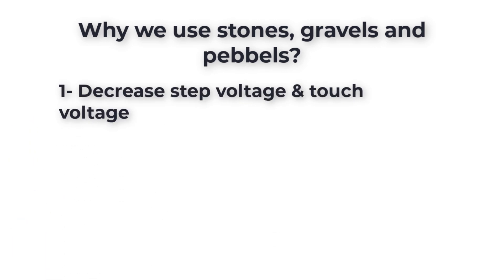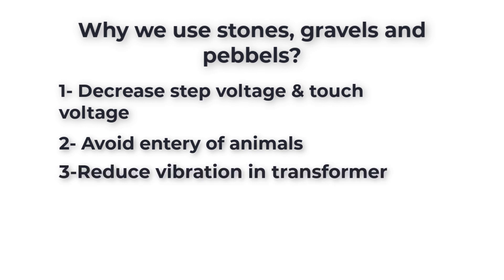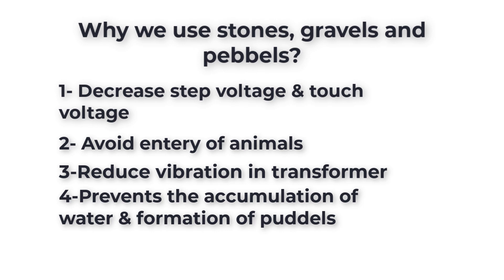Another reason for using stones beneath power transformers is to avoid entry of animals like rats, snakes, and lizards. For mechanical purposes, we use stones and pebbles to reduce vibration in the transformer. Stones and gravels also prevent the accumulation of water and the formation of puddles. Stones also eliminate the growth of small plants or grass, which can cause high moisture.